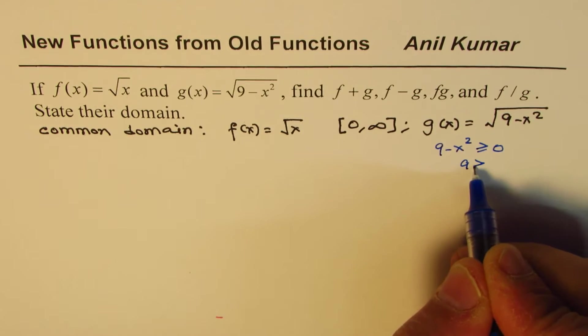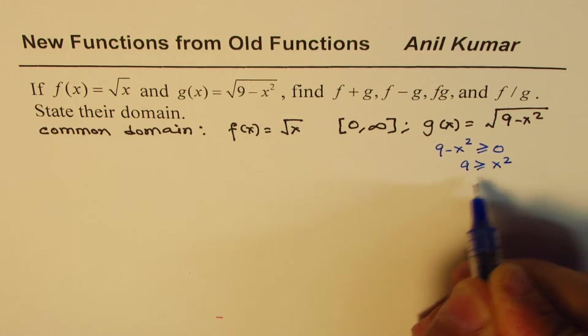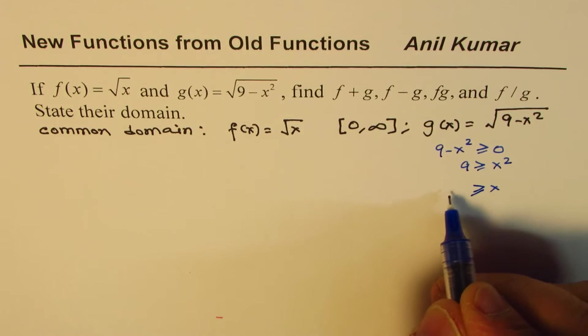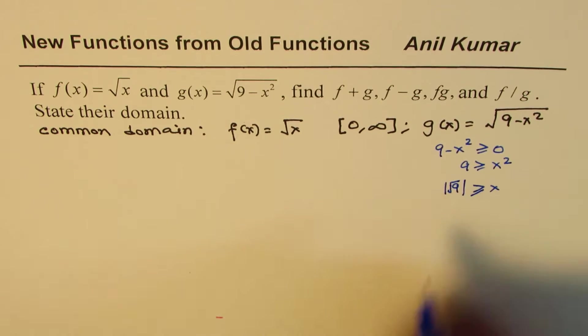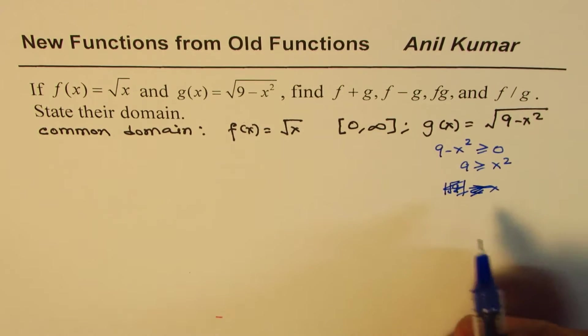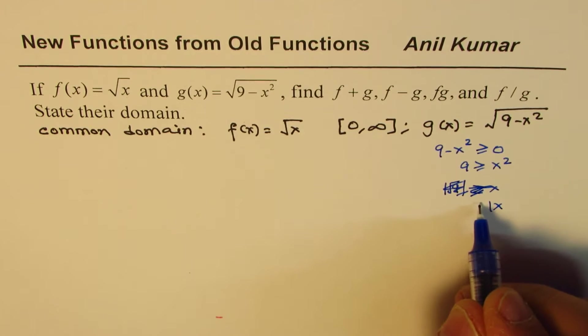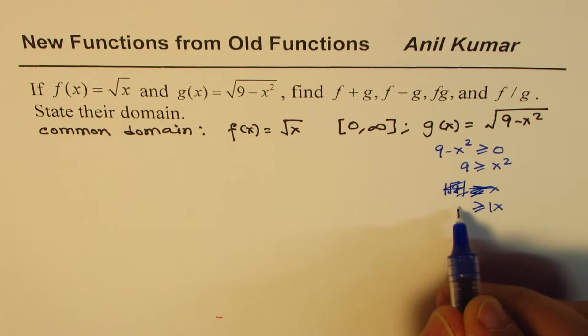So 9 is greater than or equal to x squared, or absolute value of x is less than or equal to square root of 9. When you take the square root, absolute value of x should be between square root of 9, which is 3.